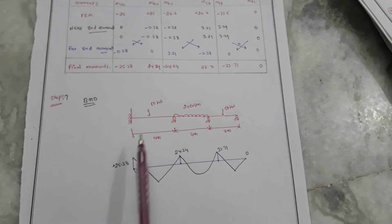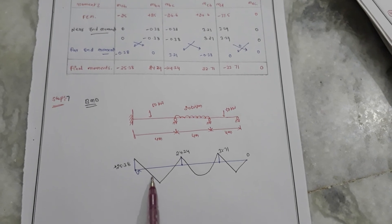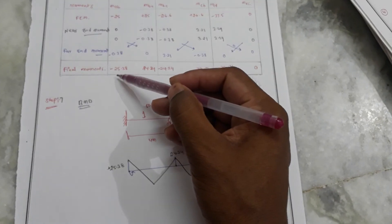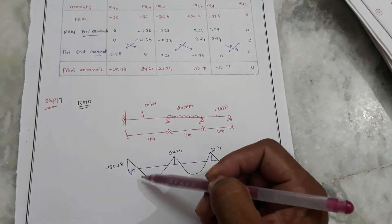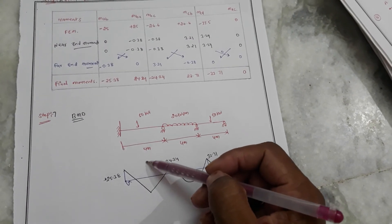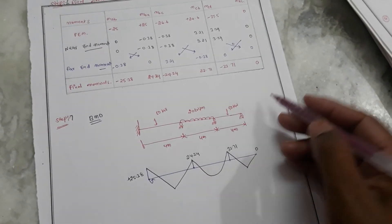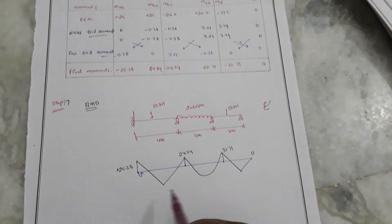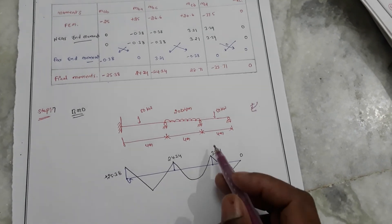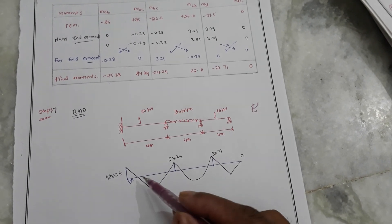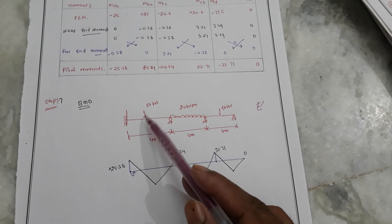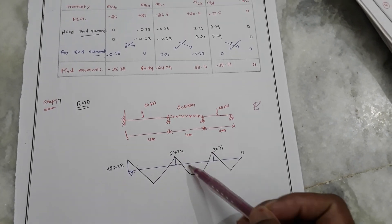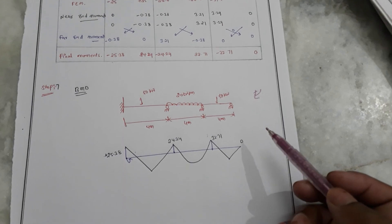From the bending moment diagram, at the point load location we draw a curve. We got a negative value, so with clockwise rotation positive, it draws slightly upward lines. At the end load we draw a curve accordingly. This completes the bending moment diagram using the Corners Method.